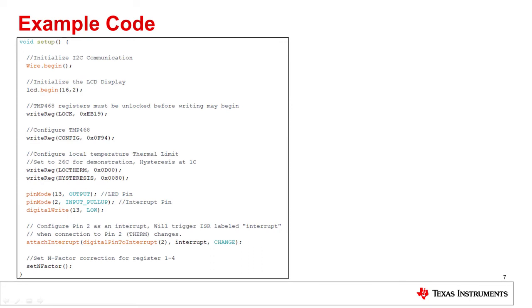We begin by initializing I2C communication and the LCD display. After unlocking the registers so that they may be written, we configure the TMP468 by writing hex 0f94 as discussed earlier. The local therm register is next set to 26C, with a hysteresis value of 1C. We designate pin 13 as an output for the LED, and we configure pin 2 as an interrupt.